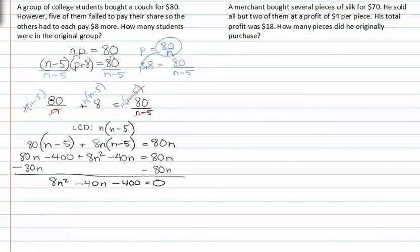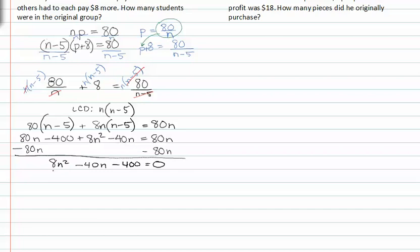And there's my quadratic equation set equal to zero. I see right now that everything is divisible by eight. I get n squared minus 5n minus 50. Notice that if I divide both sides of my equation by eight, the eight disappears, or technically divides out, and I'm left with n squared minus 5n minus 50 is equal to zero. When I factor this,